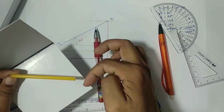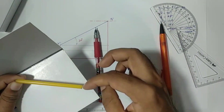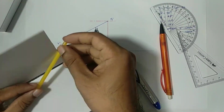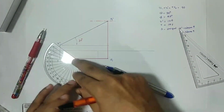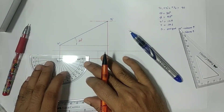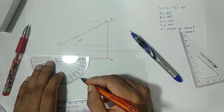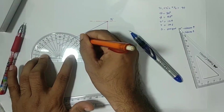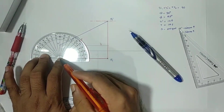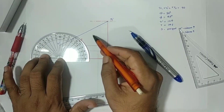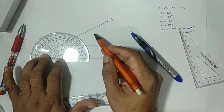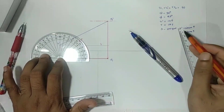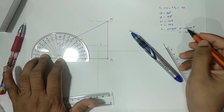End S is in front of VP and above HP in the first quadrant, but the problem states end S is in the second quadrant — meaning S is behind VP and above HP. So for the second condition, draw RS2 at 45 degrees as the true length parallel to HP. The line crosses the XY line going behind VP, satisfying the second quadrant condition for end S.